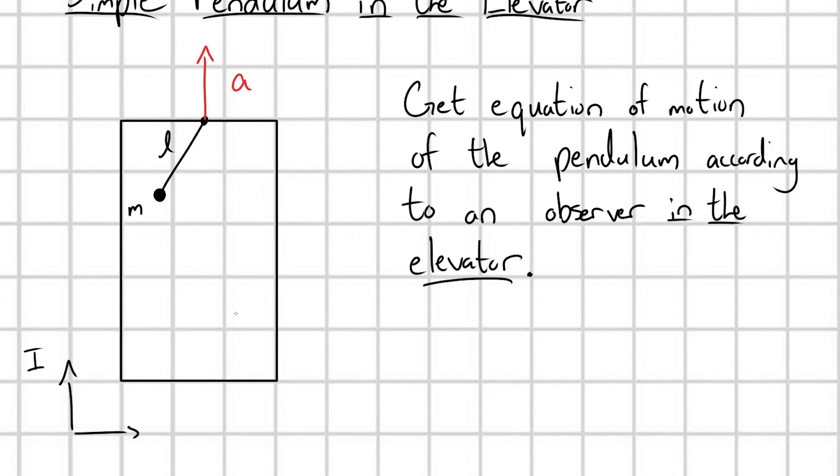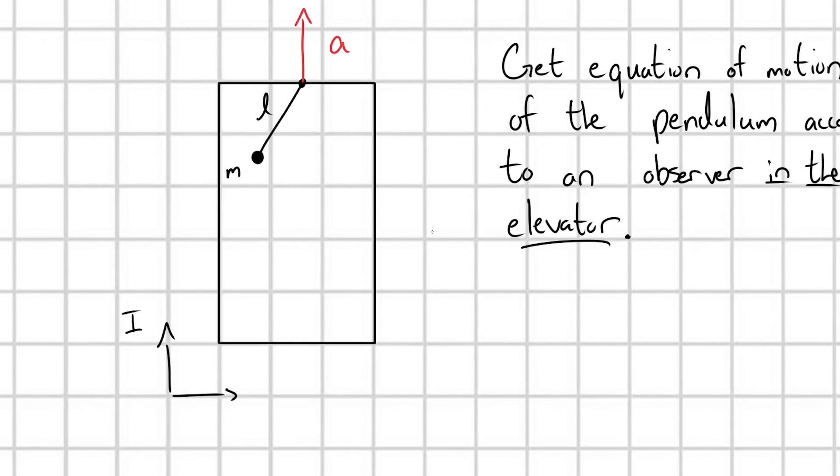However, this problem wants us to analyze the pendulum according to an observer within the elevator. And so what that means is we really need to put our frame of reference inside of the elevator. I'm going to call this N. This is a non-inertial frame of reference because it is accelerating with respect to our inertial frame I. So I call it N for a non-inertial frame, and if we're in a non-inertial frame, we're going to have to modify Newton's second law.